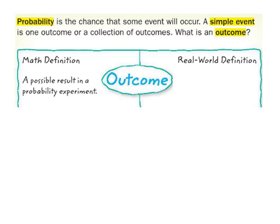A simple event is one outcome or collection of outcomes. What are the chances you get heads when you toss a coin? What are the chances you roll a six when playing Monopoly? An outcome would be what actually happens. If you're rolling a number cube, an outcome would be a two, or if rolling two cubes, an outcome would be a six and a two.